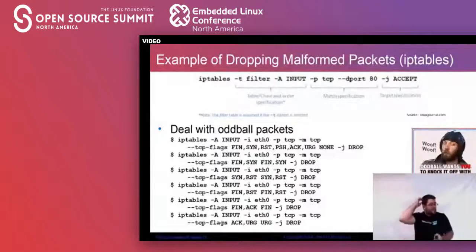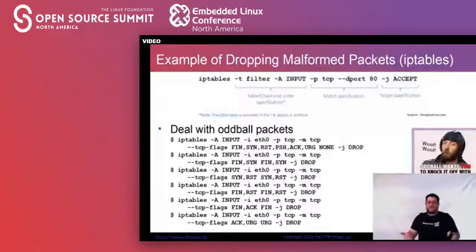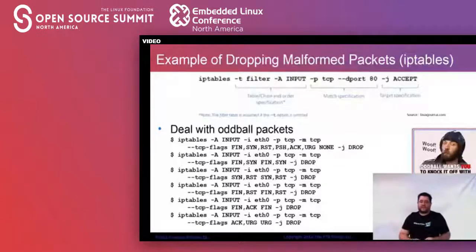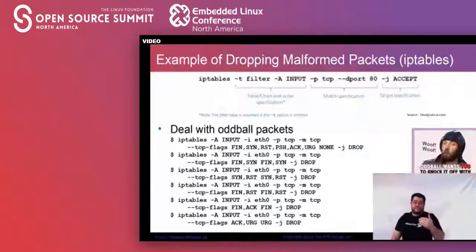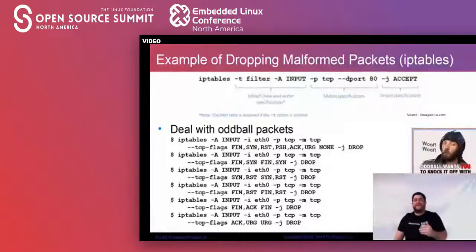The other thing X tables doesn't handle well by itself is long lists. If you've got a block list to implement directly inside of X tables, you literally have an individual rule for each block. So if you have 15,000 IPs you want to block, you would need 15,000 lines of entry, and every packet that comes in gets processed against all 15,000 lines each time. Obviously this is obnoxious.